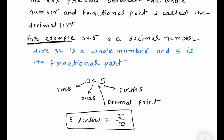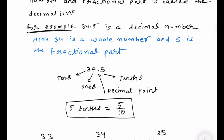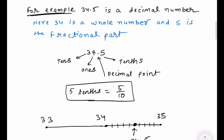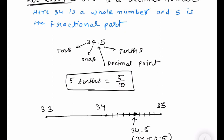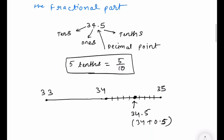For example, I have written 34.5. So 34.5 is a decimal number. Here, 34 is the whole number part and 5 is the fractional part. 4 is in ones place, 3 is in tens place, and 5 here means five-tenths — it is five out of ten parts.